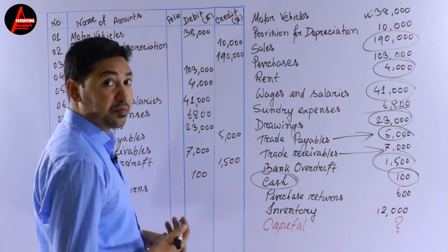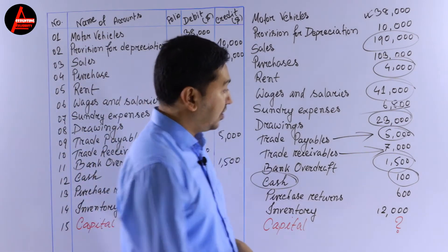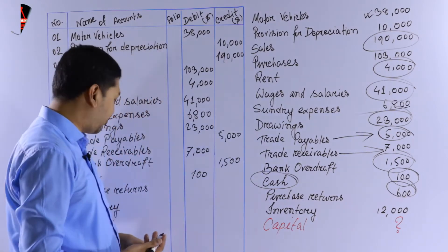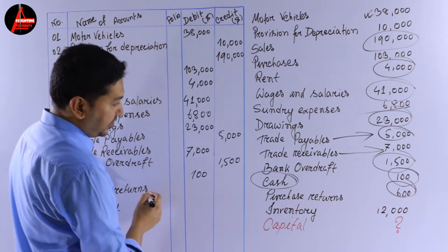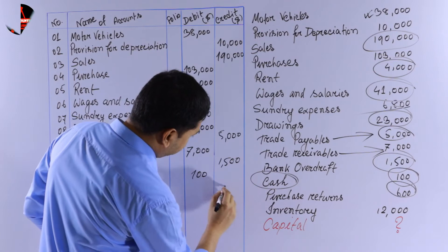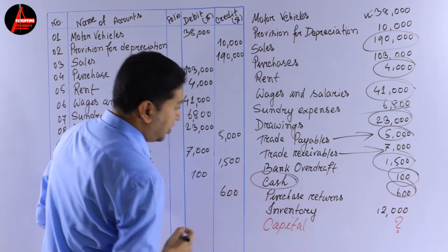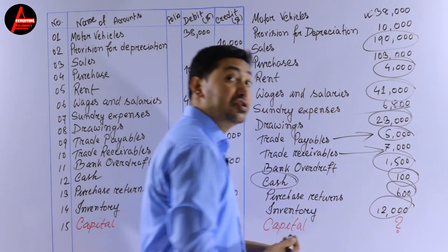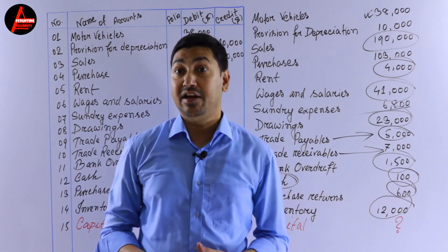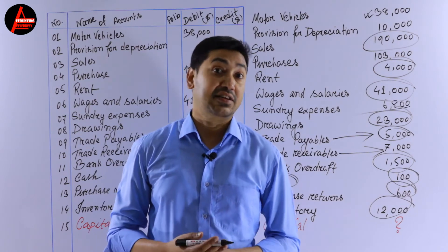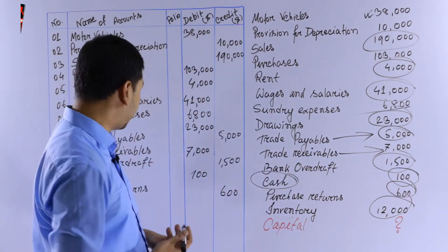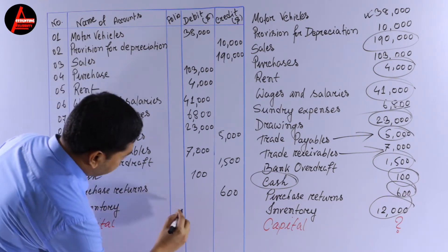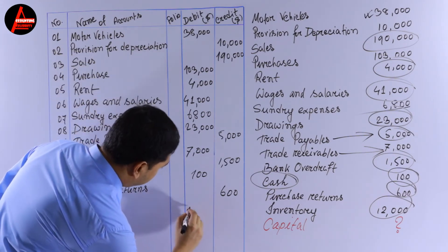Purchase returns is 600 dollars — it will be credited, so write purchase returns: 600 dollars on the credit column. Next we have inventory — it's a current asset, so assets come on the debit column. Inventory: 12,000 dollars on the debit side.